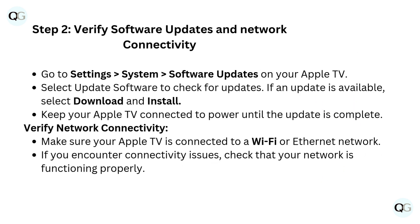Step 2: Verify software updates and network connectivity. Go to Settings > System > Software Updates on your Apple TV. Select Update Software to check for updates. If an update is available, select Download and Install. Keep your Apple TV connected to power until the update is complete.